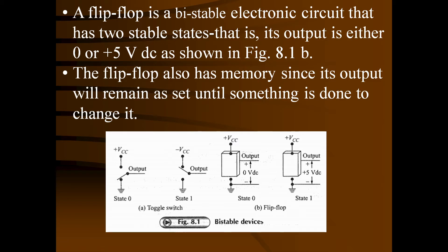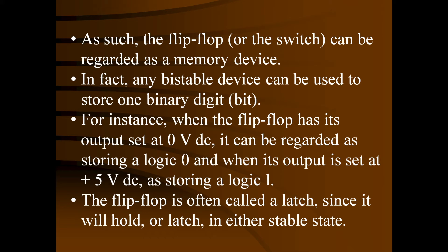The flip-flop is nothing but an electronic bistable device which has two outputs, and it can store one bit at a time — that is why it is considered a 1-bit memory device. A flip-flop is a bistable electronic circuit whose output is either 0 or +5V DC. The flip-flop also has memory since its output will remain as set until something is done to change it.